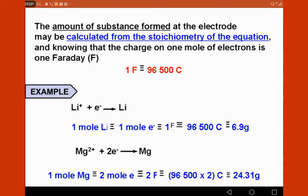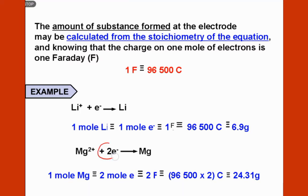The second example is magnesium. The magnesium ion needs two moles of electrons to discharge and become a magnesium atom. This means one mole of magnesium equals two moles of electrons, which is two Faradays — 96,500 Coulombs times two — giving 24.31 grams.